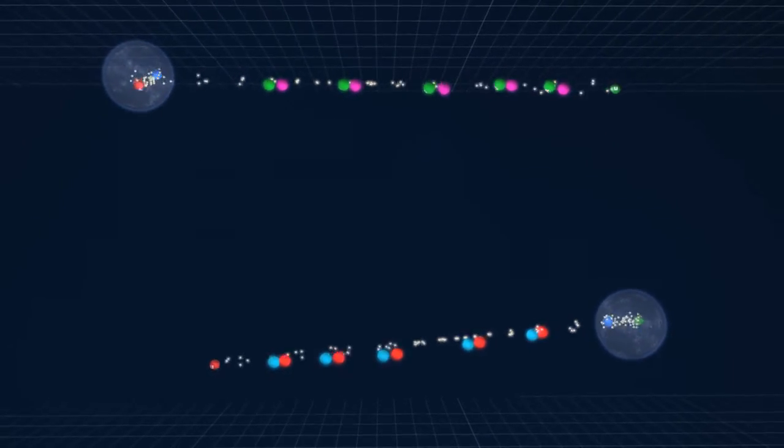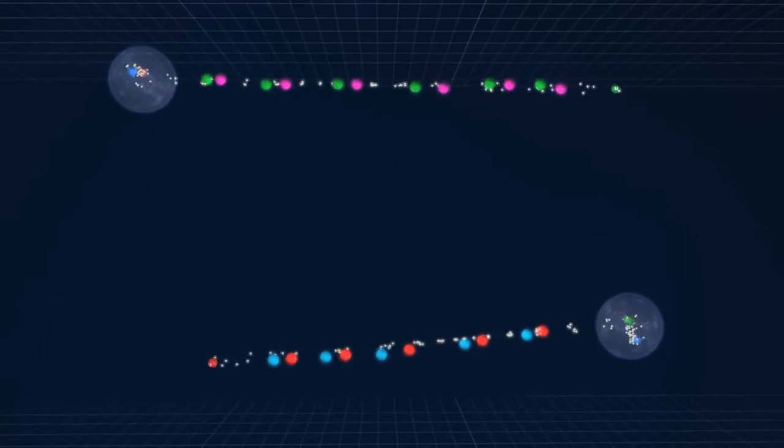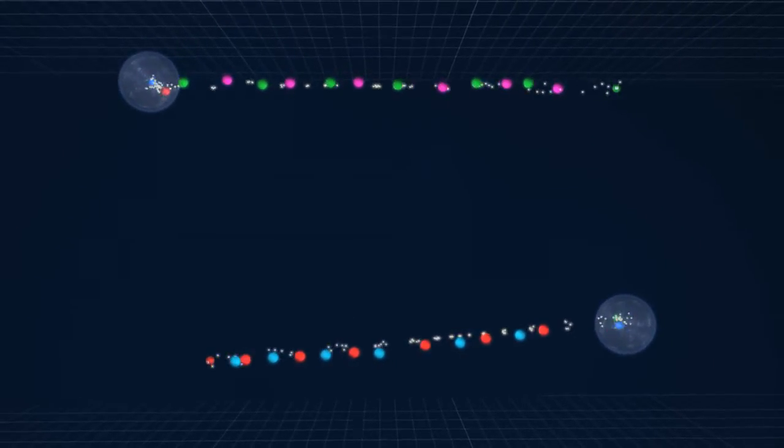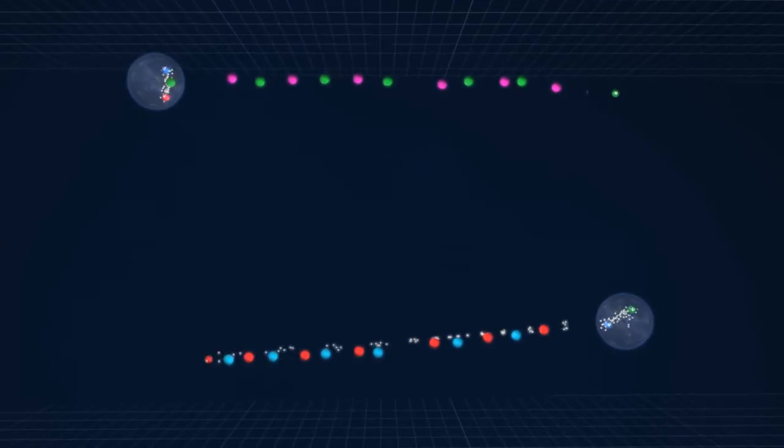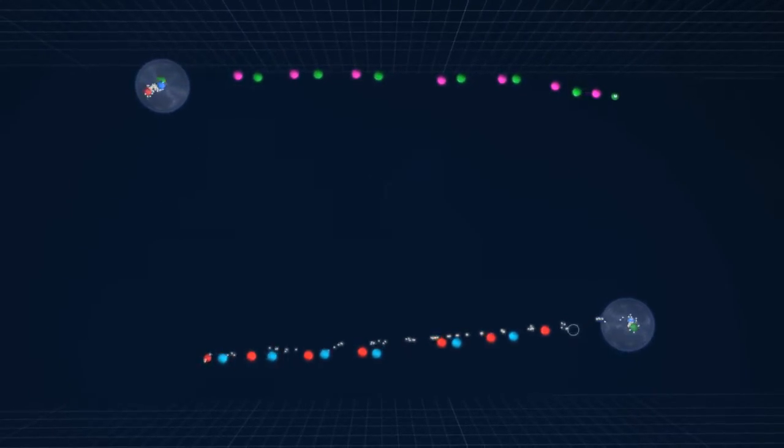The quarks continue to move apart from each other, once again stretching the gluon field between them. The gluon field breaks again by forming a quark and anti-quark pair.